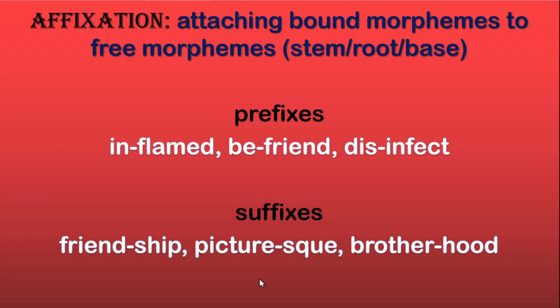We have been talking a lot about suffixes and prefixes, and the adding of suffixes and prefixes is called affixation. Affixation is attaching bound morphemes to free morphemes. The process of adding prefixes and suffixes is called affixation — fixing something to the stem, root, or base.